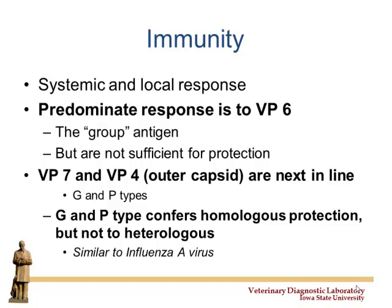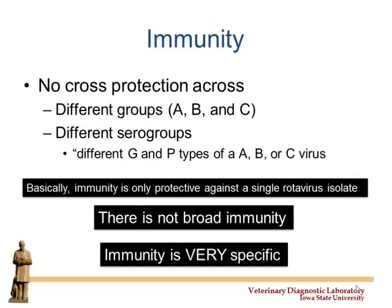There is no cross-protection between different groups A, B, and C. There is no cross-protection between different serogroups, meaning different P and G types within the A, B, and C viruses. If you take anything away from this presentation, it's that — immunity is only protective against a single rotavirus isolate. There's not broad immunity — it's very, very specific, similar to influenza virus.